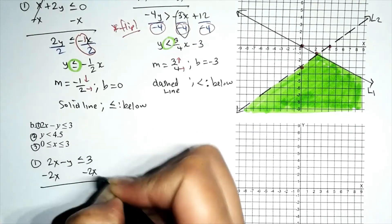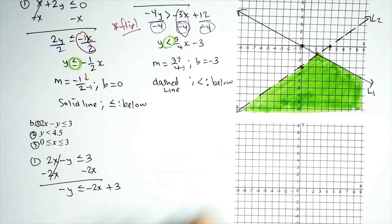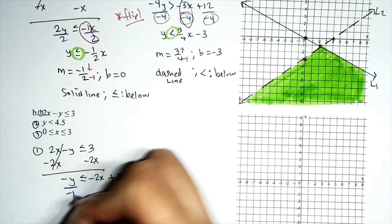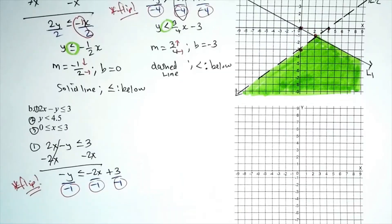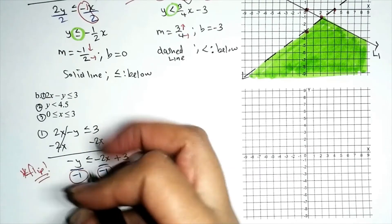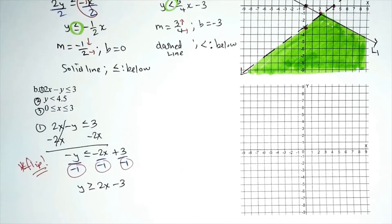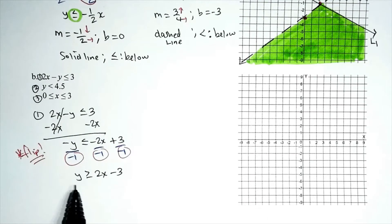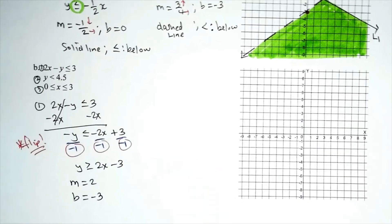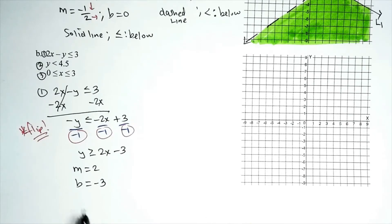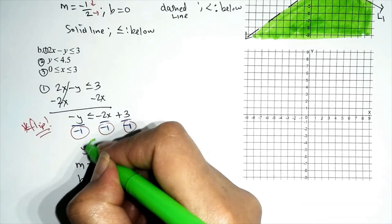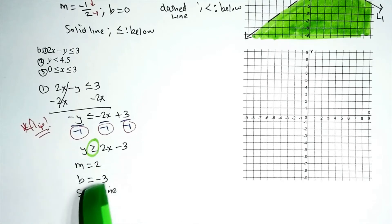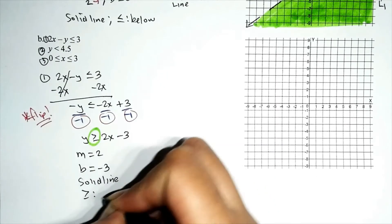Let's put 2x minus y ≤ 3 into slope-intercept form. Subtracting 2x from both sides gives −y ≤ −2x + 3. Dividing both sides by negative 1 and flipping the inequality gives y ≥ 2x − 3. The slope is 2, the y-intercept is at negative 3. Because we have the equal-to part, we use a solid line. Because we have 'greater than,' we shade above the boundary line.